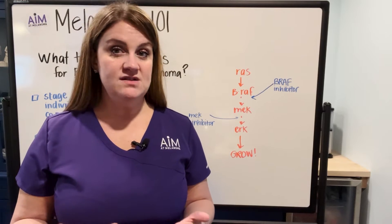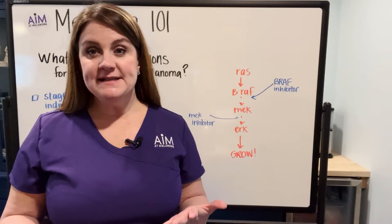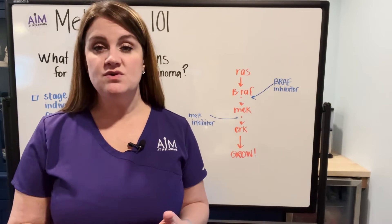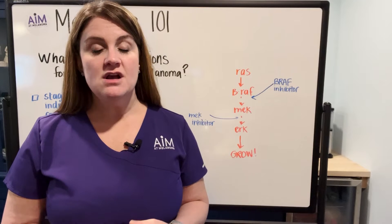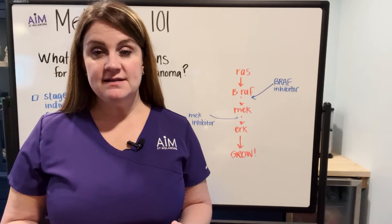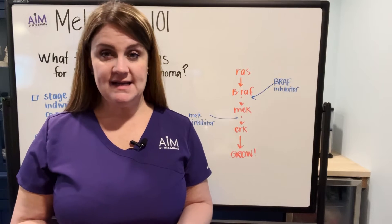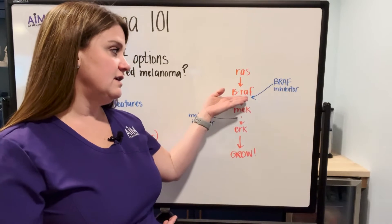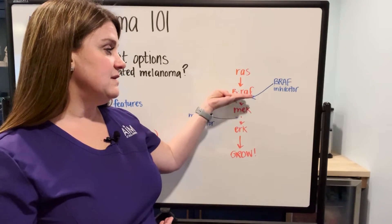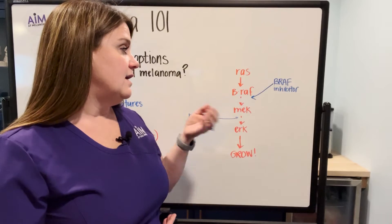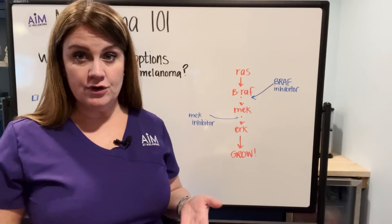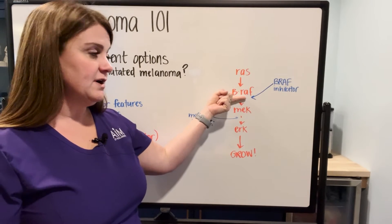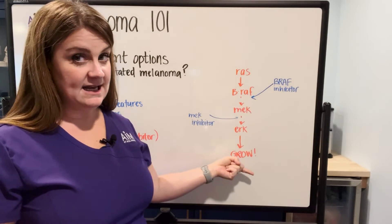When patients have the BRAF mutation, unfortunately the signal is not normal. What ultimately happens is that the cells tend to grow faster in patients with the BRAF mutation than those that do not. One of the treatment options for BRAF mutated patients is targeted therapy, which focuses on blocking this BRAF part of the MEK kinase pathway to prevent cellular growth. The BRAF inhibitor blocks this signal from occurring, and therefore the rest of this pathway can't happen.